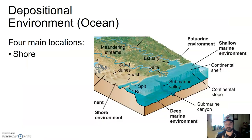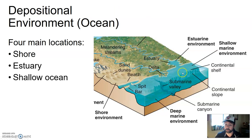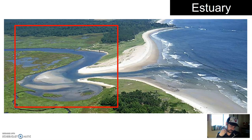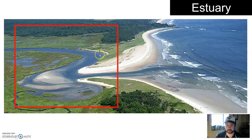So that's land as a depositional environment. Then we have the ocean area — near or in the ocean — and those four main locations include the shore itself, estuaries, the shallow parts of the ocean, and the deep parts of the ocean. The shore is a great depositional area — wave action pushes sand up onto the shore. An estuary is a specific area where a freshwater stream encounters an incursion of saltwater from the ocean, forming a unique biological ecosystem. Sediment comes from the stream side and gets pushed from the ocean side, intermingling in its own unique depositional environment.